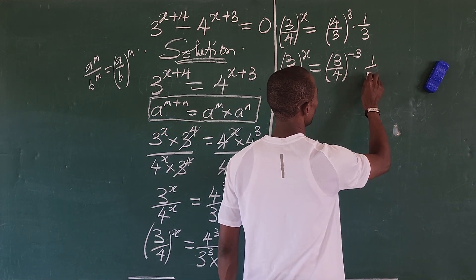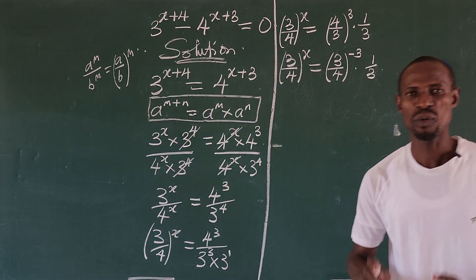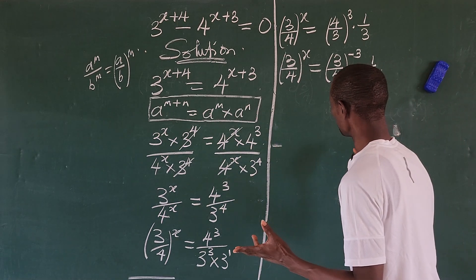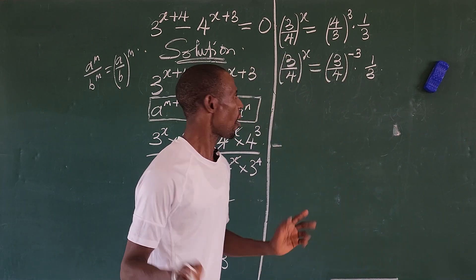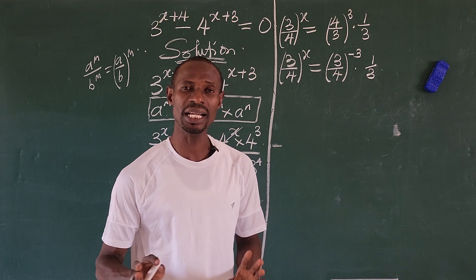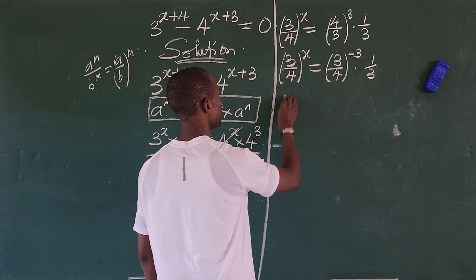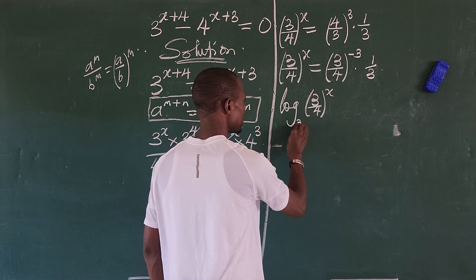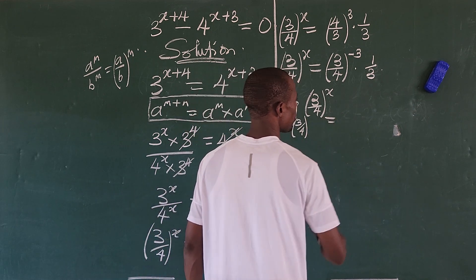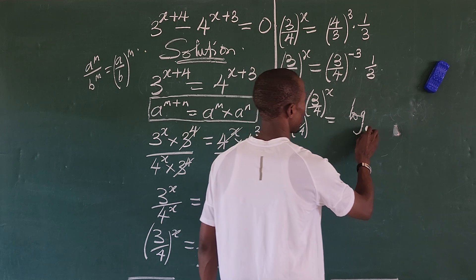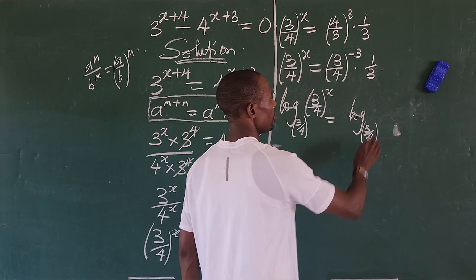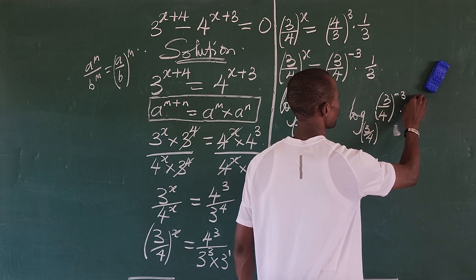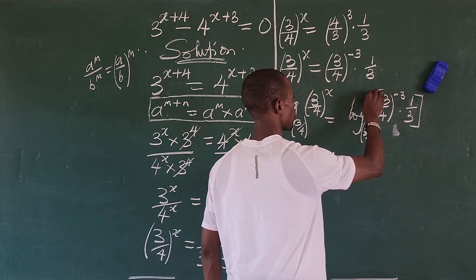We have 3 times 1/3 in the exponent on the right. At this point we want to eliminate the base from the system by taking a logarithm. Since both sides have base 3/4, we take log to base 3/4. This gives us: log base (3/4) of (3/4)^x equals log base (3/4) of [(3/4)^(minus 3) times (1/3)].